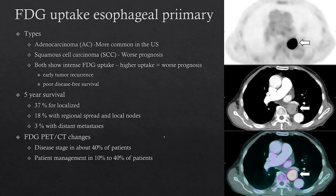FDG is good for staging disease in about 40% of patients and changes patient management in about 10% to 40% of patients depending on the study. In this example, you can see a mass on CT with intense FDG uptake, and on the fused images it matches the esophageal mass.